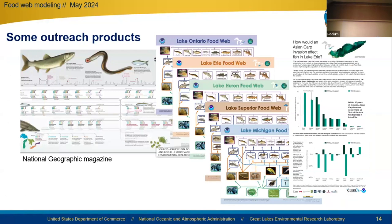We have also produced some outreach products. These have included a graphical fold-out insert from National Geographic magazine, shown on the left. In the center are popular food web brochures, often used by teachers, and on the far right, an example of some of our fact sheets.